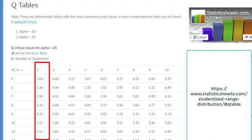So the Q value will change. We've got 6 degrees of freedom for the error term, which gives a Q value of 3.46.